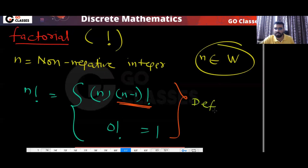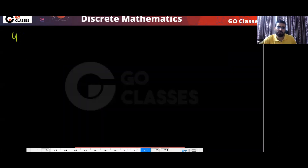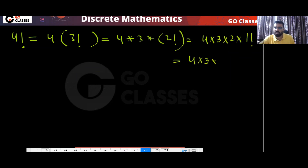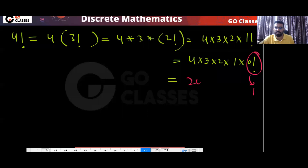This is how factorial is defined. So tell me, what will be four factorial? That will be four multiplied by three factorial. What is three factorial? Three factorial is three multiplied by two factorial. That is four into three into two into one factorial. One factorial gives four into three into two into one into zero factorial, and zero factorial is already one. So the answer will be 24.